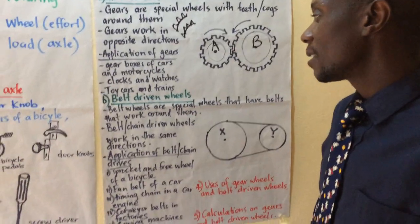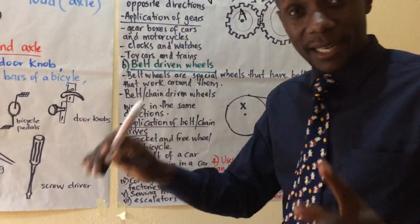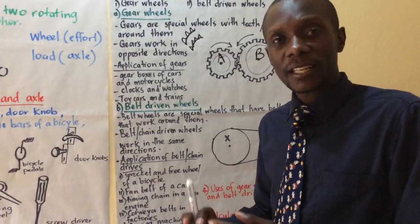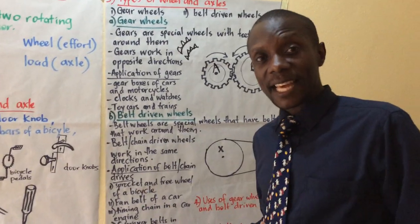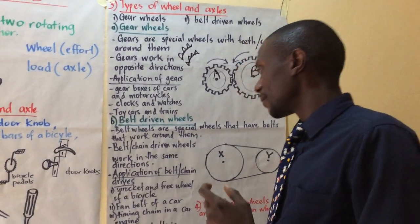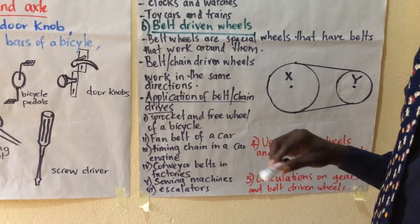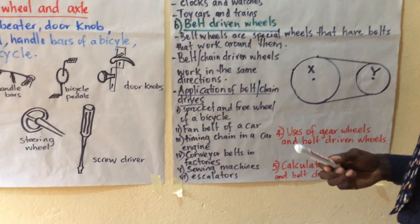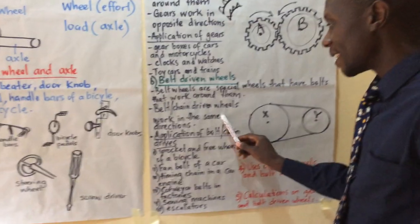When we move to the belt driven wheels — belt driven wheels are special wheels that have belts that work around them. One wheel is joined to another using a belt and motion is transmitted from one wheel to another. Usually one wheel is bigger than the other; the bigger wheel is working as the effort arm and the smaller wheel is working as the load arm. Sometimes we have a chain around them instead of a belt — so those are called chain driven wheels or chain drives. Belt driven wheels or chain driven wheels work in the same direction.